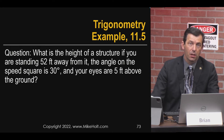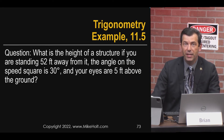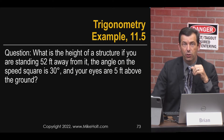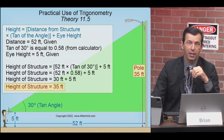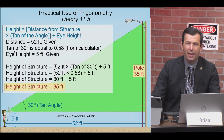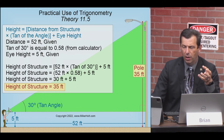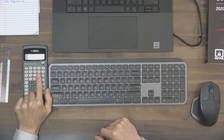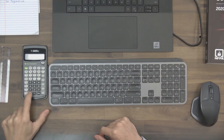So what's the height of a structure if you're standing 52 feet away, the angle on the speed square is 30 degrees, and your eyes are 5 feet above the ground? Here's a diagram showing the same thing. I measured that I was 52 feet away and my eye height was 5 feet. On a calculator there's a tangent function — Mario, hit the tangent button with 30 degrees — and it gives us 0.58.